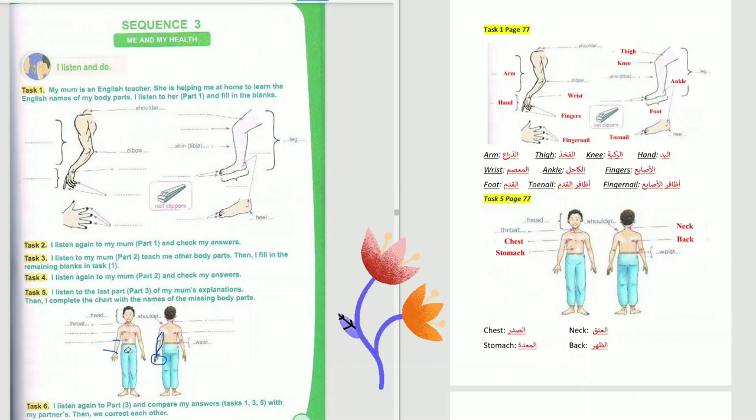Well done, Aya! In Task 5, we have chest, stomach, neck and back. Thank you!